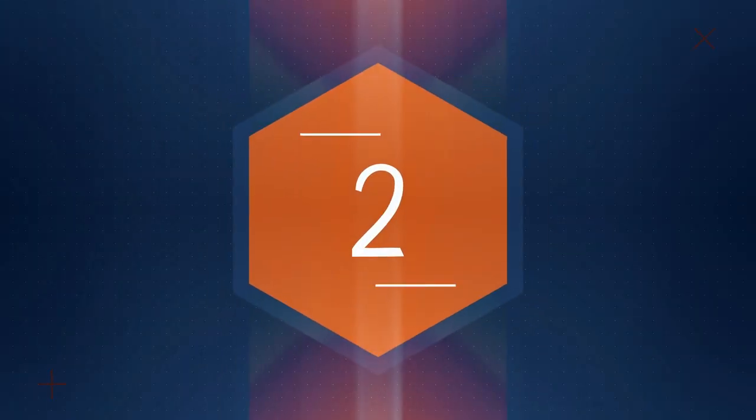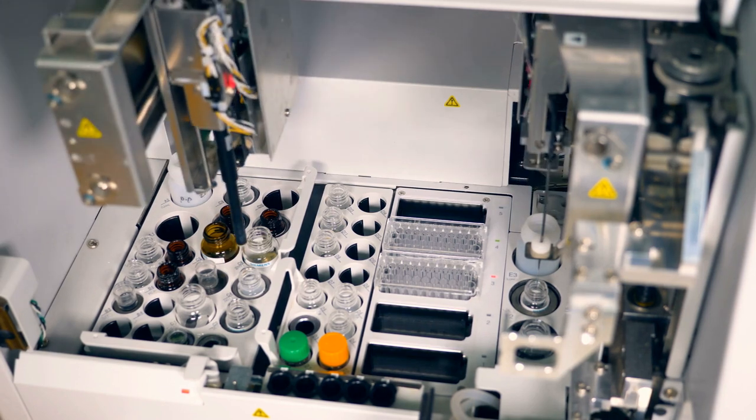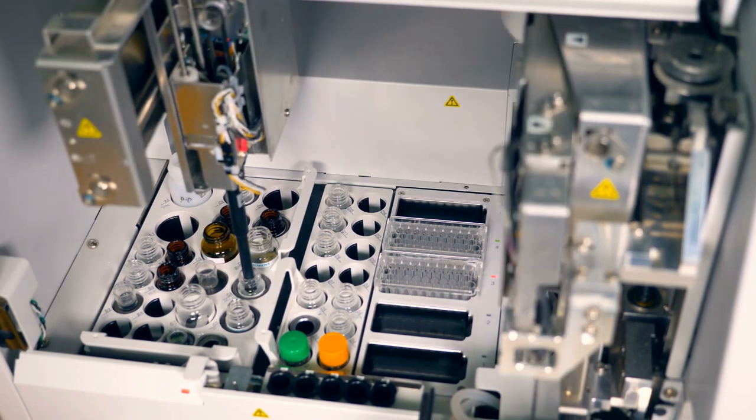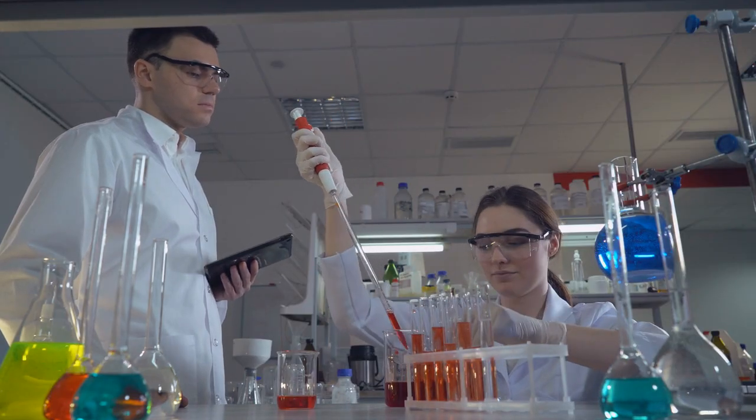Step 2: Cell purification and quality control. After differentiation, the islet cells are purified to remove unwanted or undifferentiated cells. Quality control testing ensures the cells meet safety, purity, and potency standards.